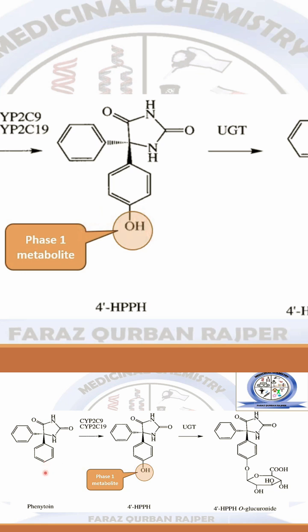Before Phase 1, there is no polar functional group, but now a new polar functional group has been introduced. This is the Phase 1 metabolite. After this, the drug will undergo Phase 2 conjugation reaction, which is glucuronic acid conjugation facilitated by glucuronosyl transferase enzyme.